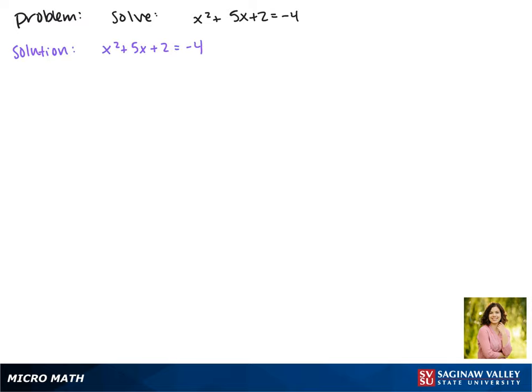By moving 2 to the other side, we get x squared plus 5x plus some number equals negative 6 plus some number.